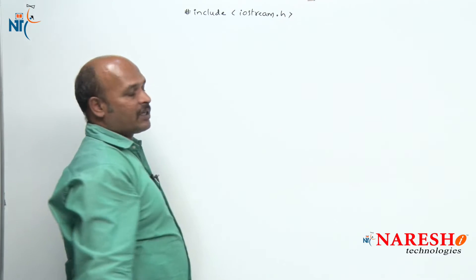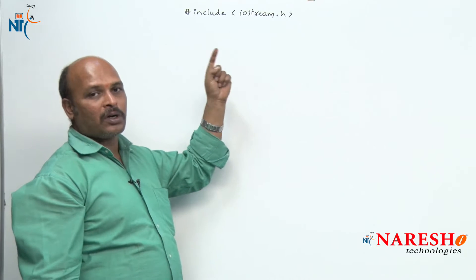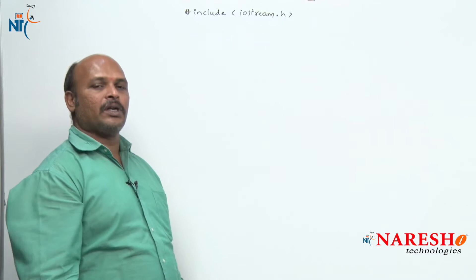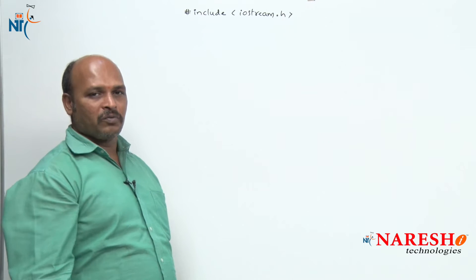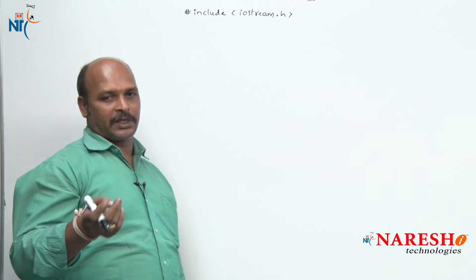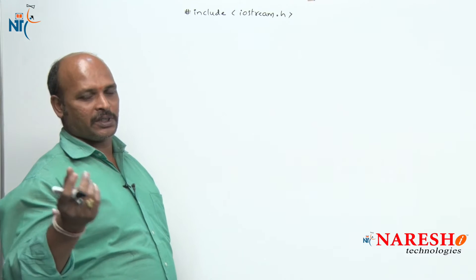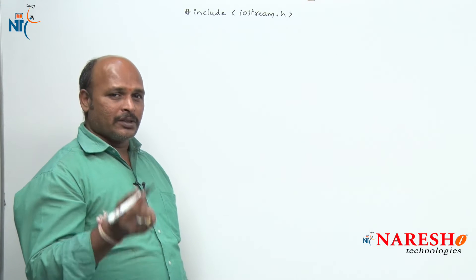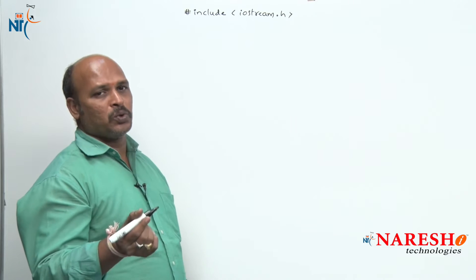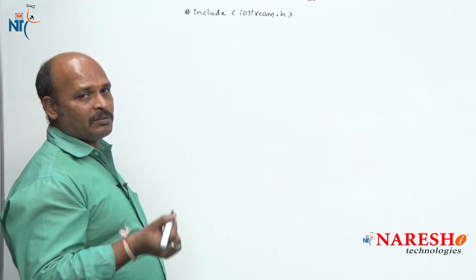First, hash include iostream.h — because in our program we are going to use cout and cin objects. You know that the cout and cin objects belong to iostream.h.